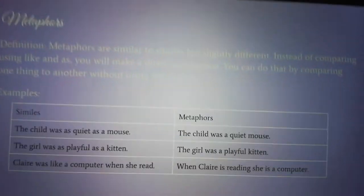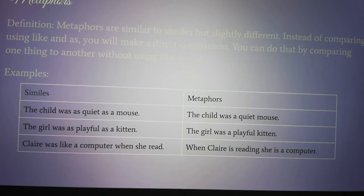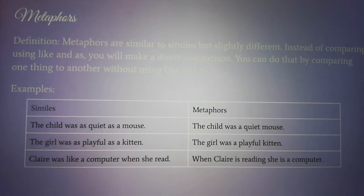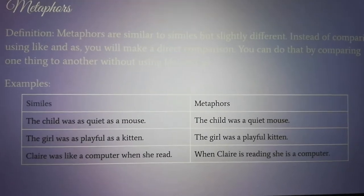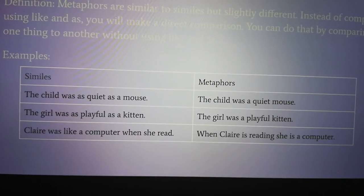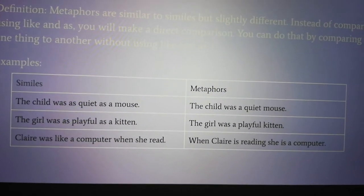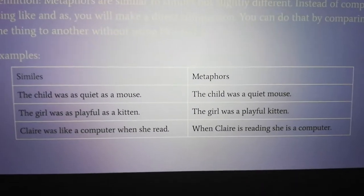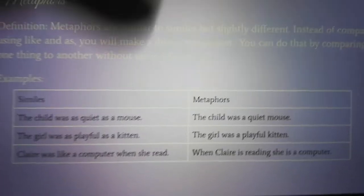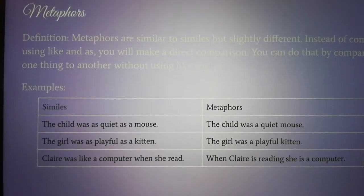The next one is metaphors. Metaphors are similar to similes, but slightly different. Instead of comparing using "like" and "as," you make a direct comparison without those words. A simile would be: the child was quiet as a mouse — but the metaphor would be: the child was a quiet mouse. A simile: the girl was as playful as a kitten; the metaphor: the girl was a playful kitten. Simile: Claire was like a computer when she read; metaphor: when Claire is reading, she is a computer. When converting from a simile to a metaphor, you may need to change the phrasing to make sure it still makes sense.